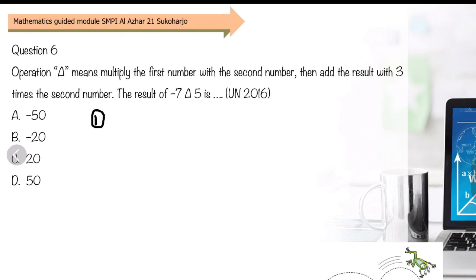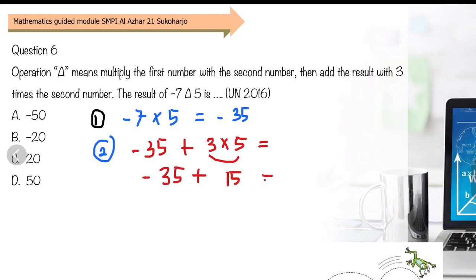Multiply the first number, negative 7, times the second number, 5, equals negative 35. Then add the result with 3 times the second number. So negative 35 plus 3 times 5. Work this out first: 3 times 5 is 15. Negative 35 plus 15 equals negative 20. So the answer is B.